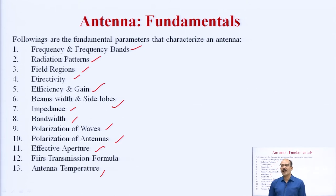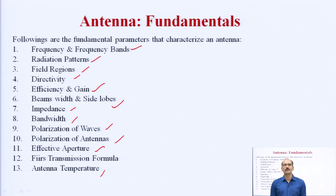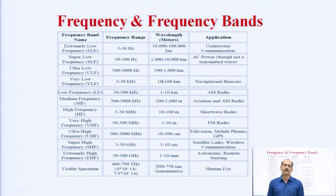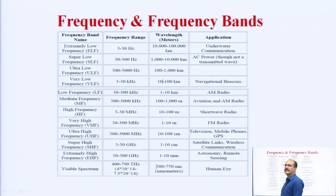You all are already studying these parts in your antenna subject, but as far as telemetry is concerned, some of them are very much required to understand here. That is why I am taking all of them one by one. So first of all — frequency and frequency band. When we are talking about the frequency and frequency band, you can see that here we are dividing the complete frequency range as per the frequency allocation.